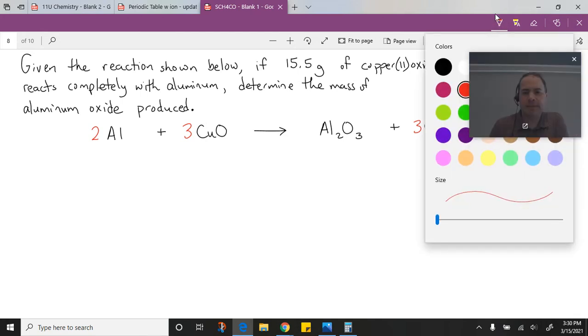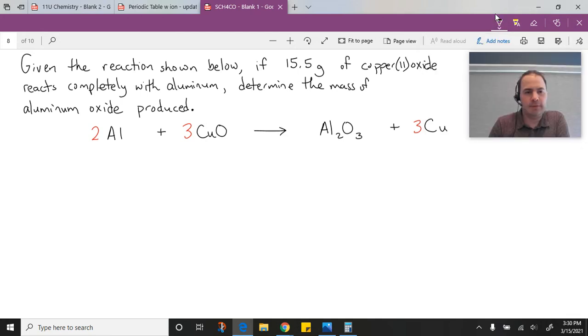We've got it all balanced, now we can look at solving this. Let's pull out the information we have in the question. Our mass of copper 2 oxide is 15.5 grams, and we want to find the mass of aluminum oxide.